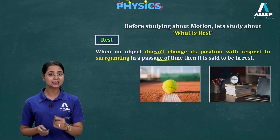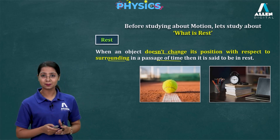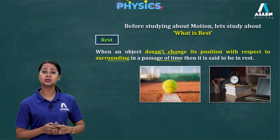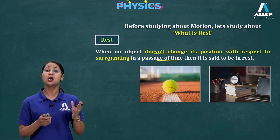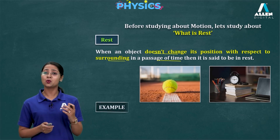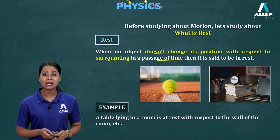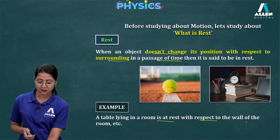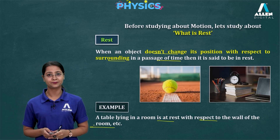We have some examples of rest. There is a ball, a table on which books are placed, and a clock is also placed. Is there any change in the position of these objects? No — there is no change in the position of these objects with respect to their surroundings. So we can conclude these objects are at rest. A table lying in a room is at rest with respect to the wall of the room.